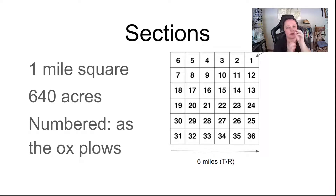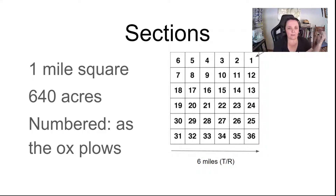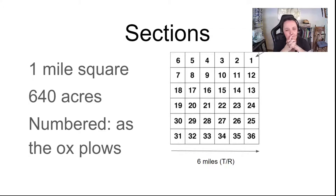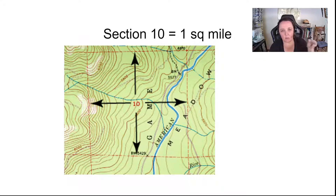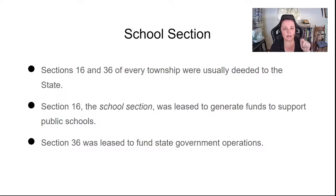The sections are numbered in a particular way, starting at the northeast corner with section one and going west — like the surveyors were walking west — then going south and then back east again. This is sometimes called the ox-plow pattern. So it's a strange numbering system. Each section is one mile square. Usually in most places they set aside section 16 to be a school and section 36 for government operations and that kind of thing.